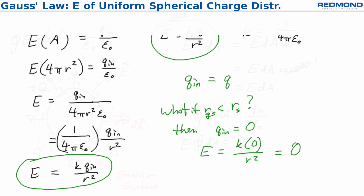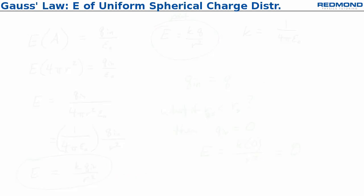So to summarize all of this, what we have then is when the radius is bigger than or equal to the radius of the sphere, the electric field magnitude equals K times Q of the sphere over r squared. When r is less than the radius of the sphere, then the electric field equals zero.